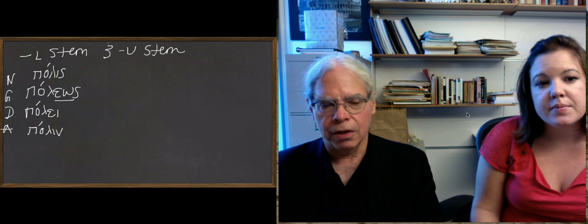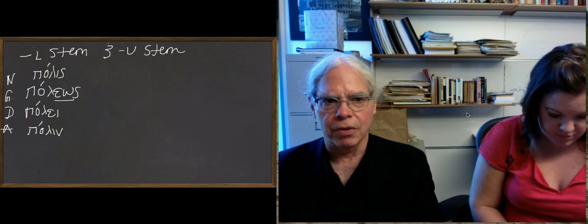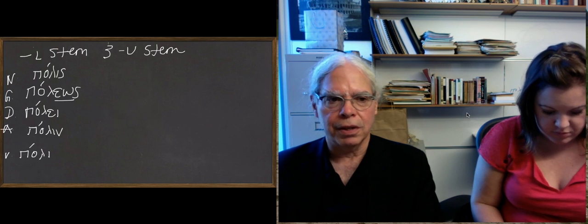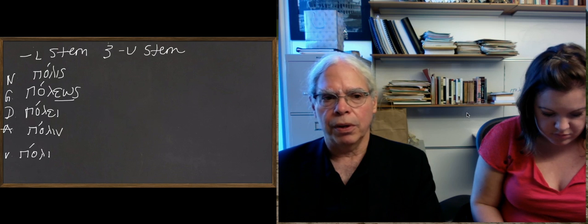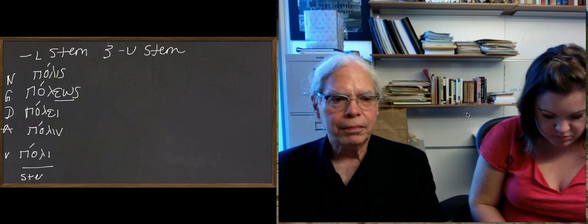There's a separate vocative for these I-stems, and that's just poli without the s. Remember, we've said that the s is the nominative ending. You can see it pretty clearly there. The vocative is just the plain stem of the I-stem.